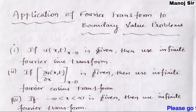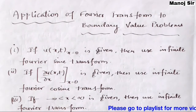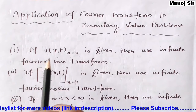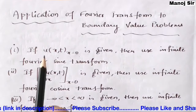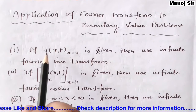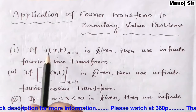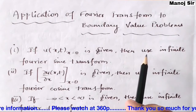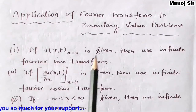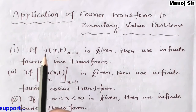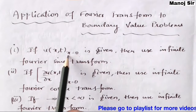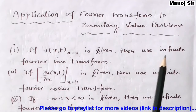Let us start the topic — application of Fourier transform to boundary value problems. The first point: if u is a function of x and t, and the value of u is given at x equal to zero, then we need to use the infinite Fourier sine transform.